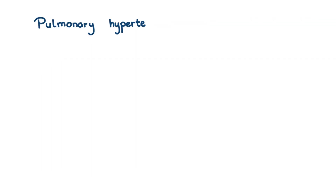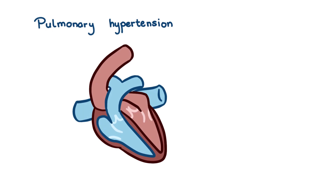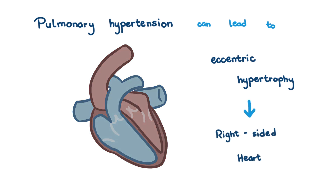Pulmonary hypertension is very bad. The right side of the heart is not very good at handling increased blood pressure — the left side is much better at this. So the right side compensates by eccentric hypertrophy, and in really severe cases, decompensates into right-sided heart failure.